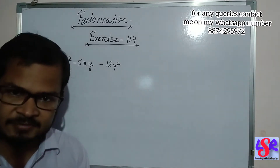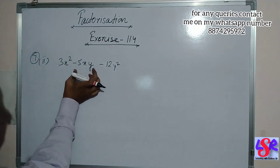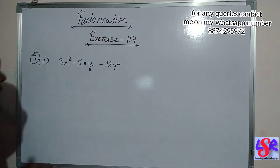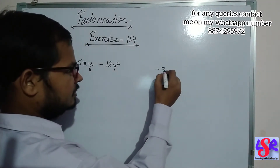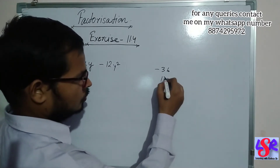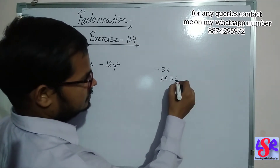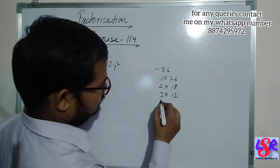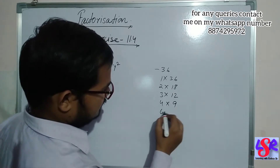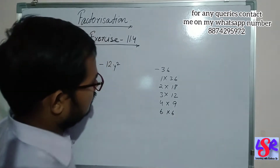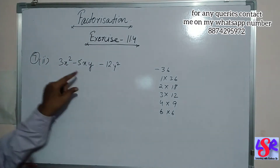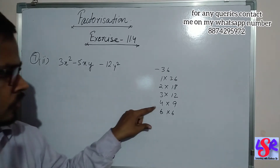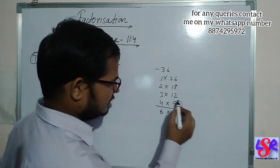Now let's go with question number 7, second part. Here we are having 3x square minus 5xy minus 12y square. We multiply 3 and minus 12 to get minus 36. The factors of 36 are 1 into 36, 2 into 18, 3 into 12, 4 into 9, and 6 into 6. As we have minus 36, we subtract to get 5, and we find 9 minus 4 equals 5.